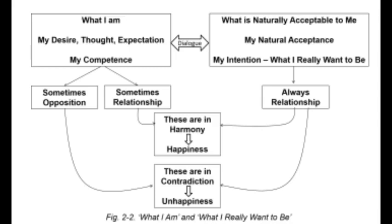In general, a contradiction between what I am and what is naturally acceptable to me will result in disharmony within. Only when what I am and what is naturally acceptable to me are in harmony, we are comfortable within. When we are in harmony within, we are in a state of happiness. When we are in a state of contradiction within, we are in a state of unhappiness. The very process of being in this dialogue starts facilitating one's progress towards harmony. We start becoming more and more comfortable within — that is, our self-evolution.